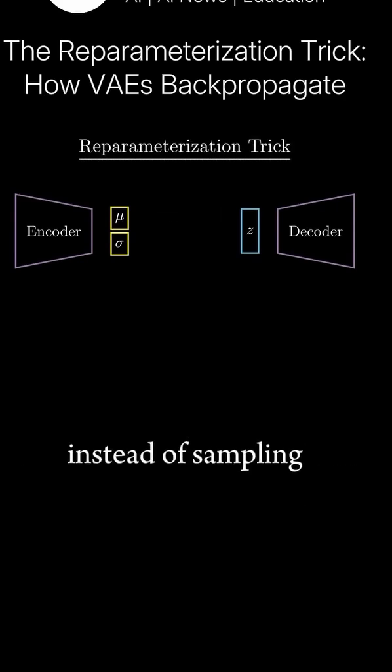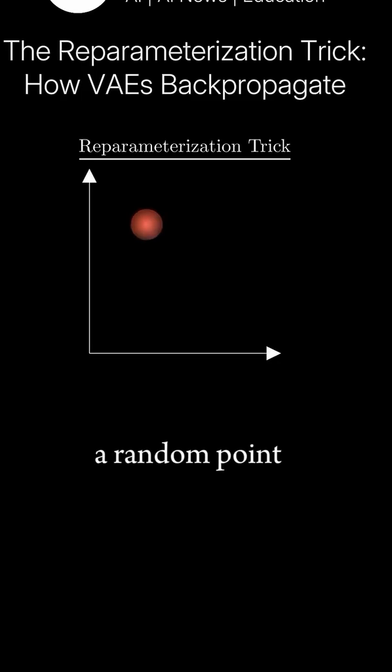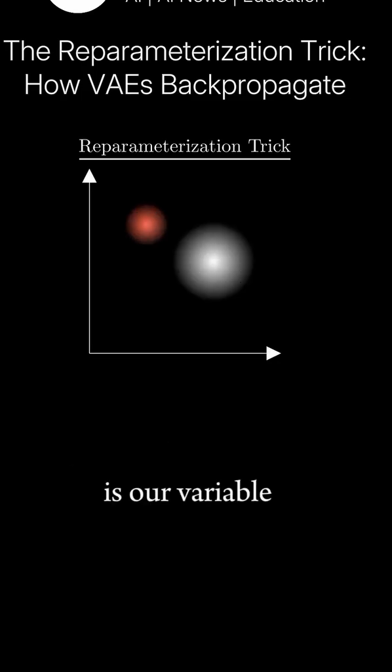Instead of sampling directly from the Gaussian distribution, we introduce a random variable often called epsilon to handle the randomness outside of the network. This trick is actually pretty simple, but very powerful. First, we sample a random point from a standard normal distribution. This is our variable epsilon.